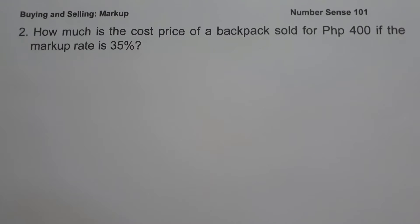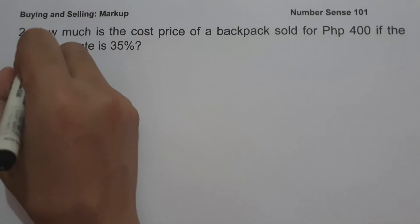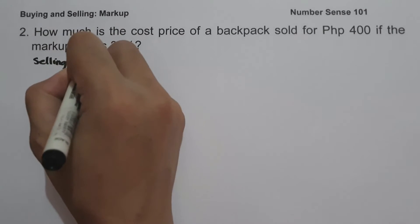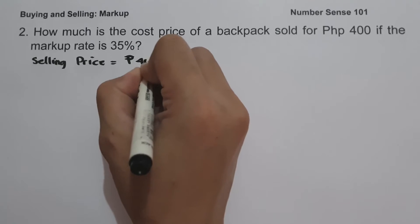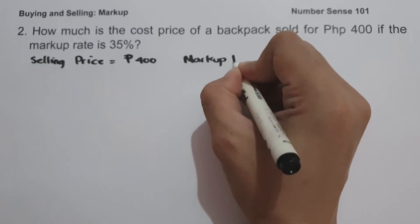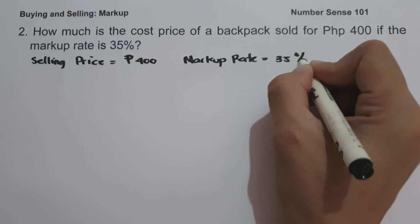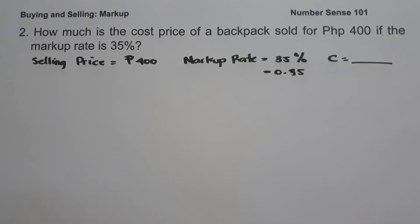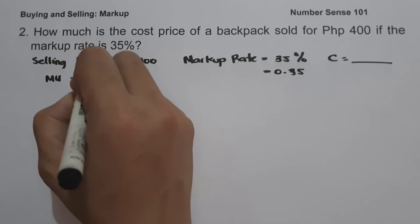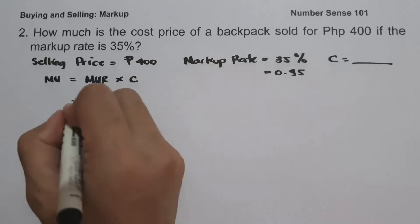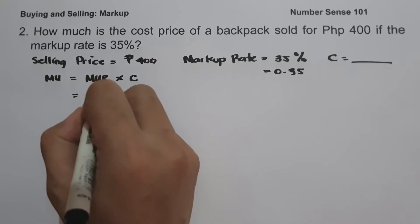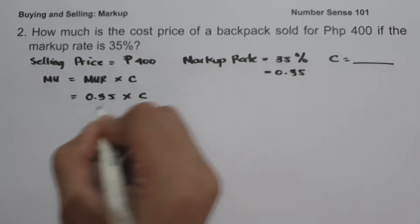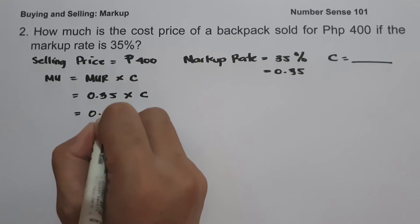On example number two: how much is the cost price of a backpack sold for 400 pesos if the markup rate is 35 percent? To determine the cost price, let us identify our given: selling price is 400 pesos, markup rate is 35 percent or 0.35 in decimal, and we are looking for the cost. Using the formula markup equals markup rate times cost, we have 0.35 times C, which equals 0.35C.